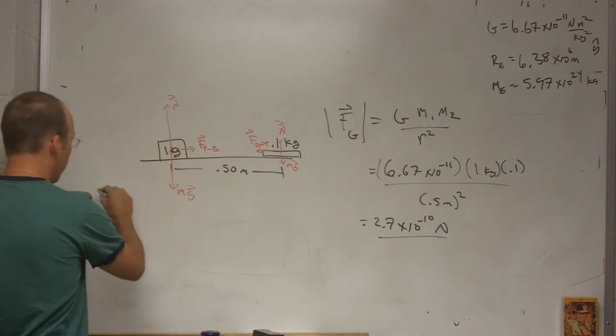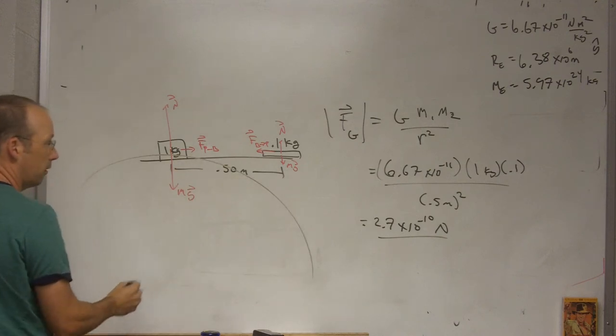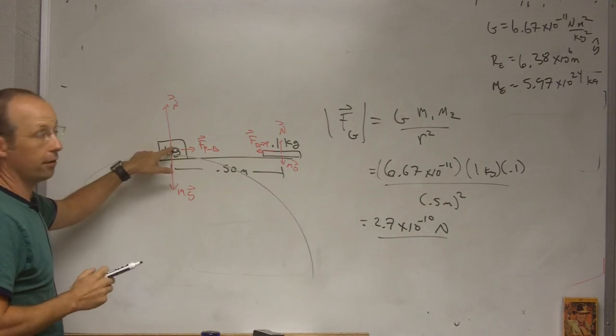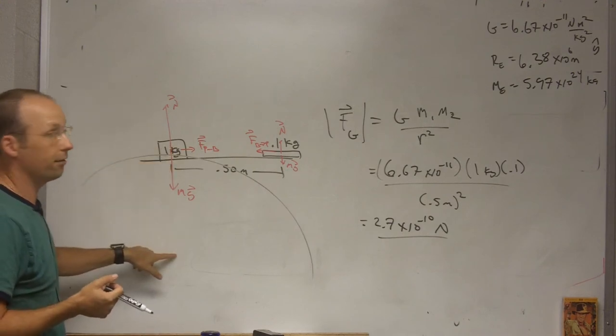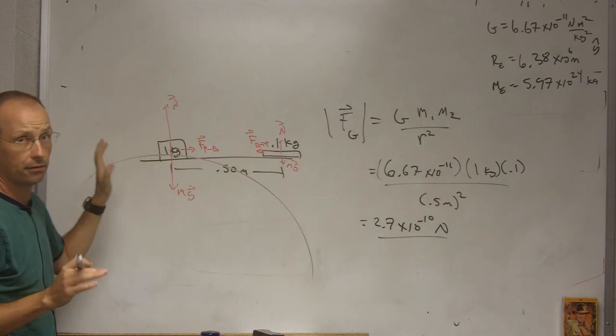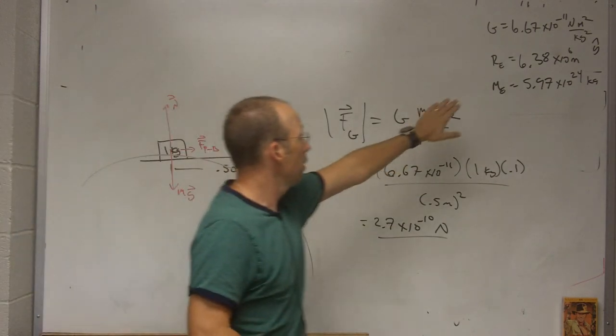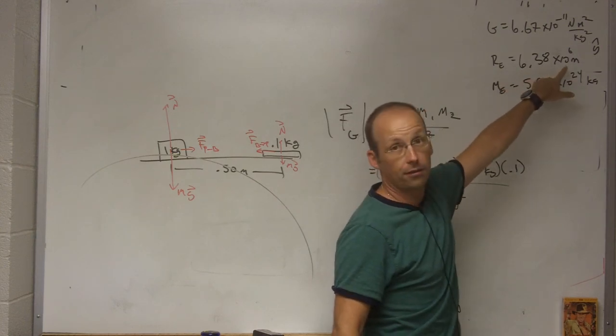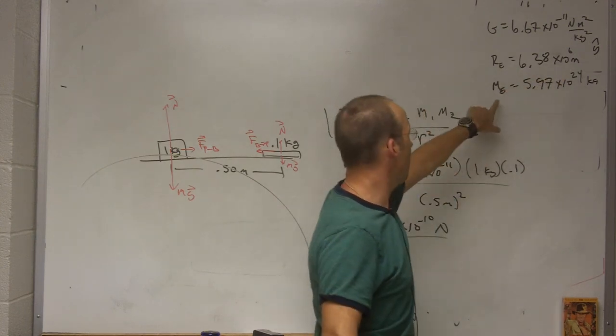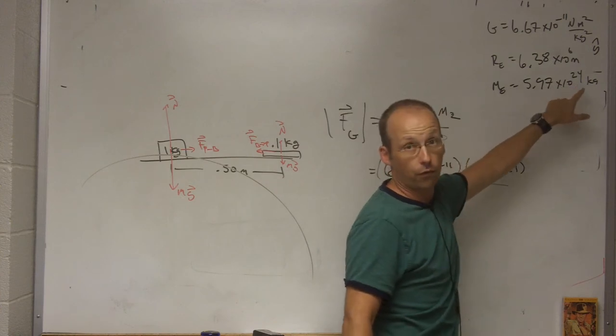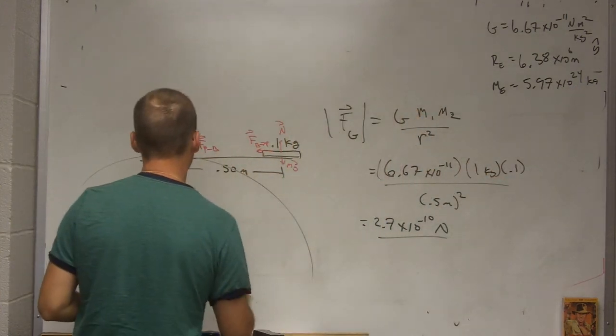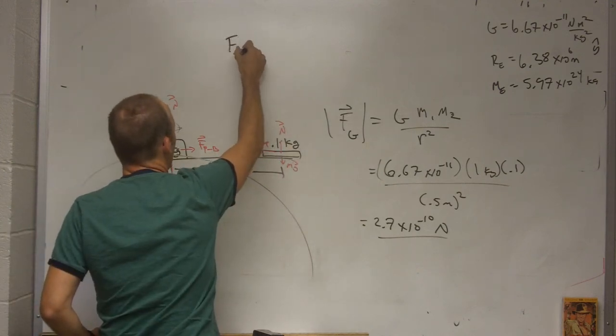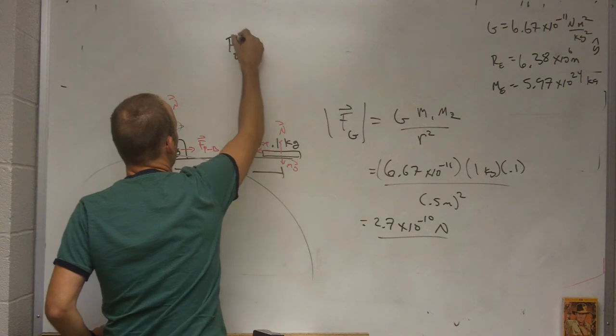So let me go ahead and compare this to the gravitational force from the earth. Here's the earth right there. How far apart are they? They're essentially, if it's on the surface of the earth, the distance to the center of the earth plus some small amount, but that's super small. So this is the radius of the earth, 6.38 times 10 to the 6 meters. And this is the mass of the earth, 5.97 times 10 to the 24th kilograms.